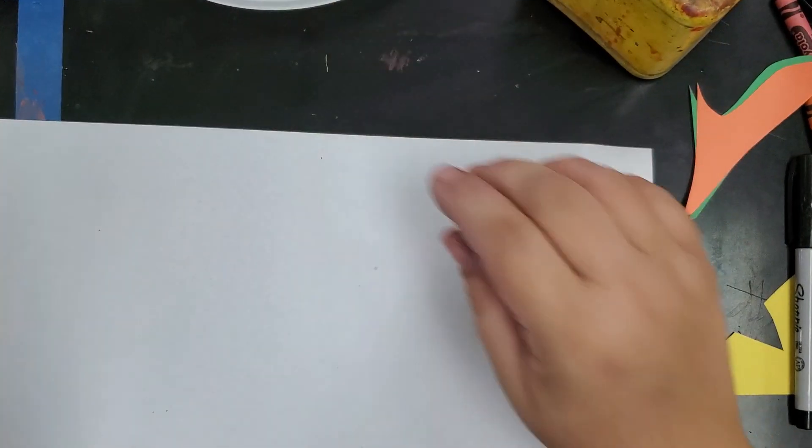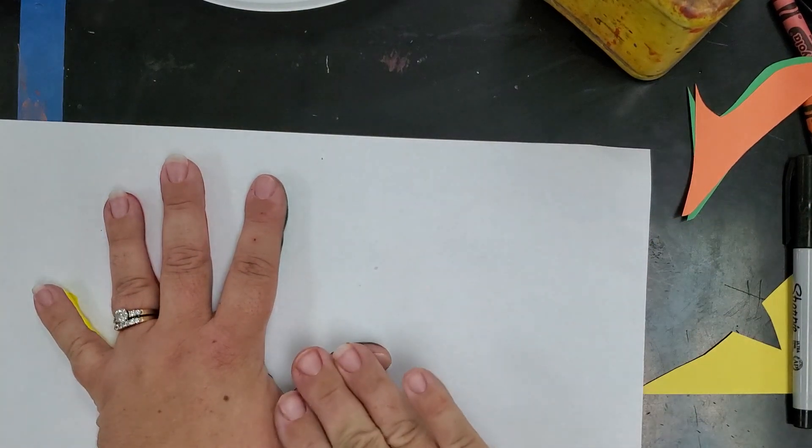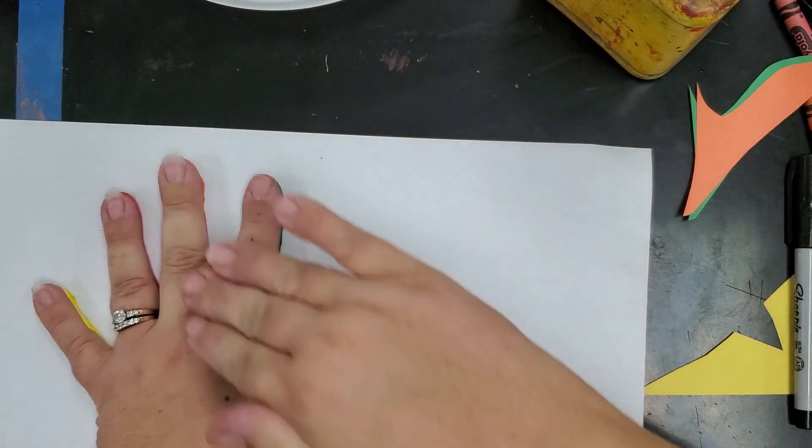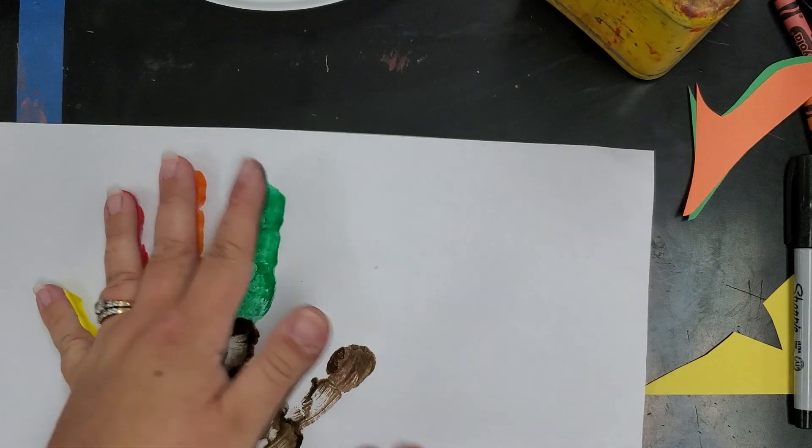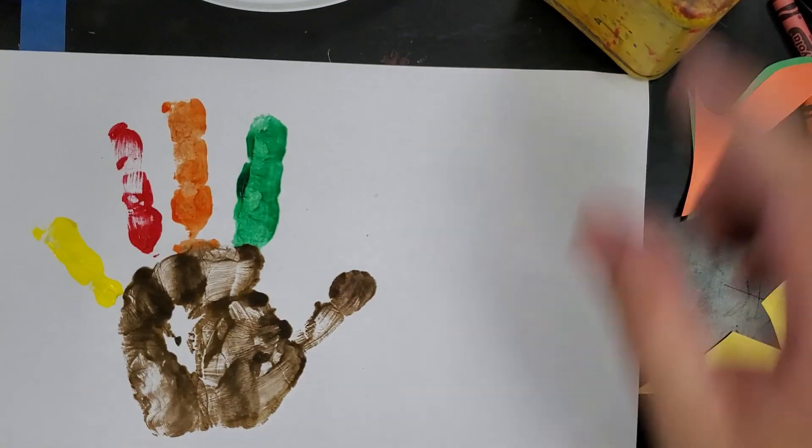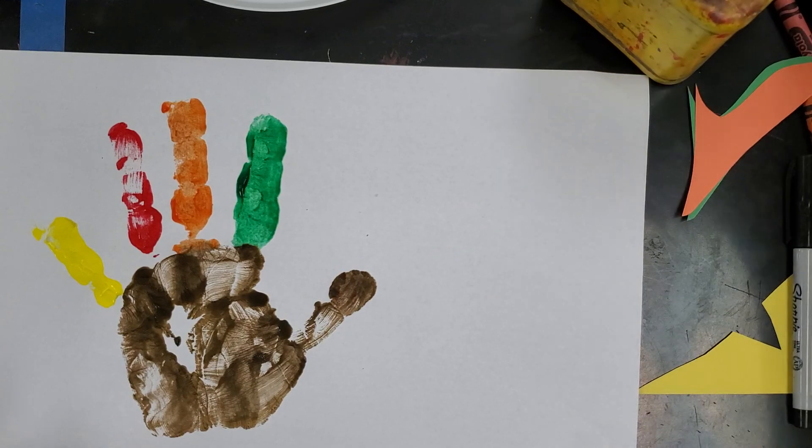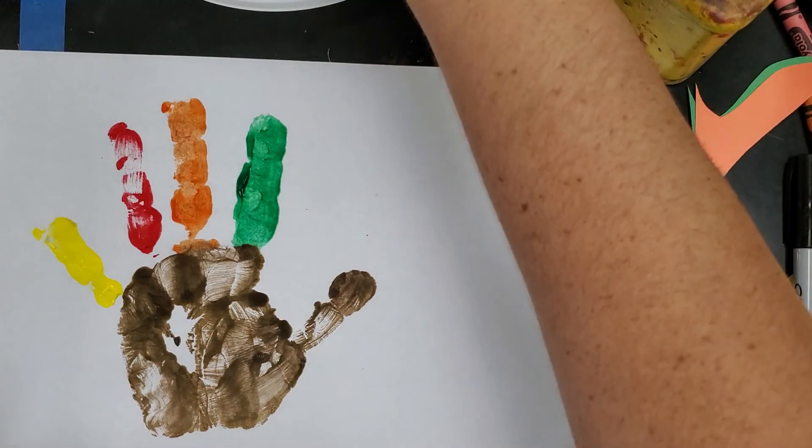Then you're going to turn your hand over. Make sure you're quick with putting it down. Push on your hand everywhere where there's paint so it all transfers, and hold your paper down and lift it up. There's my turkey. I think I'm going to take the rest of my paint and I'm going to add my details. You can also wait until it dries and add your details with marker if you don't want to use more paint.